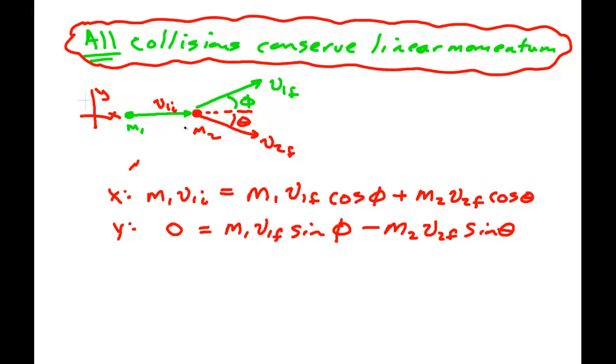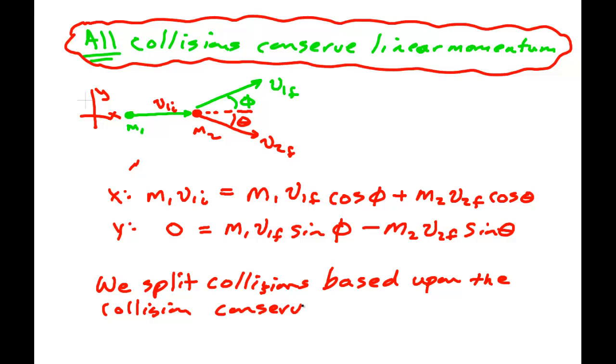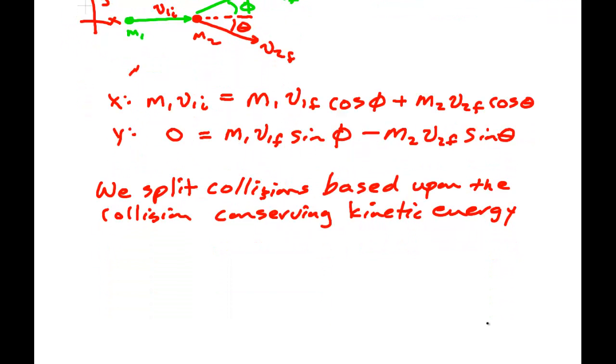So we split collisions based upon whether the collision conserves kinetic energy. So there are two types: those that do conserve it and those that do not conserve it.